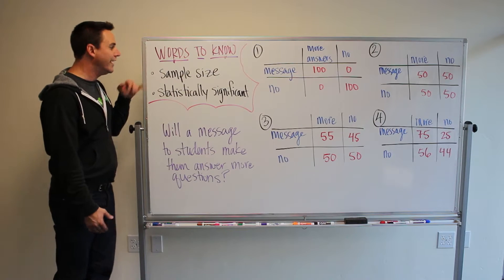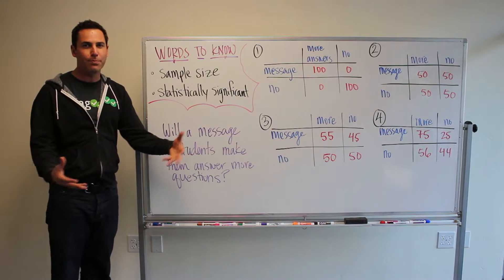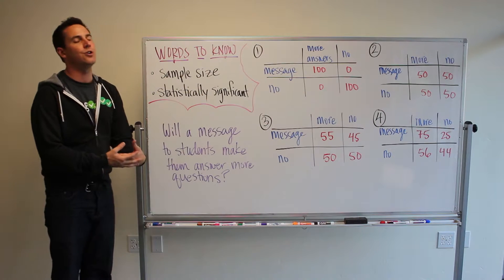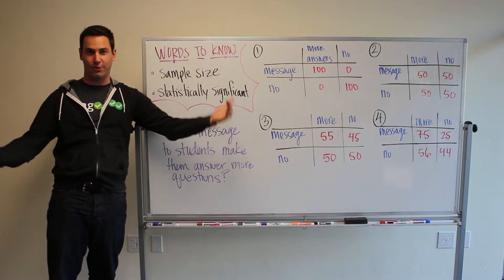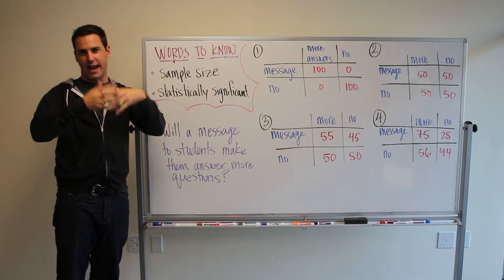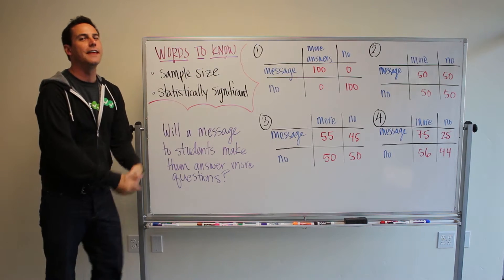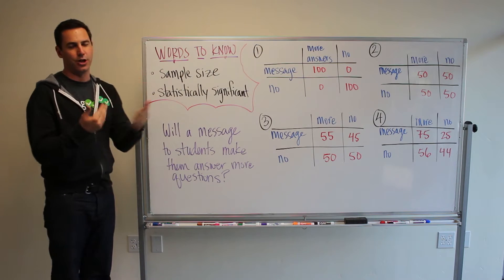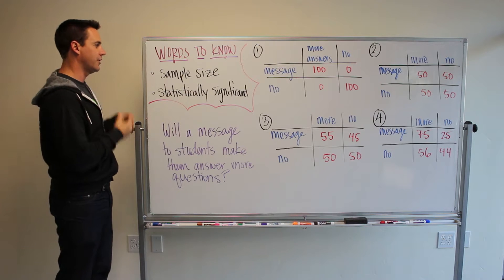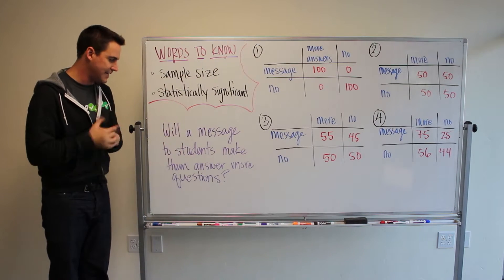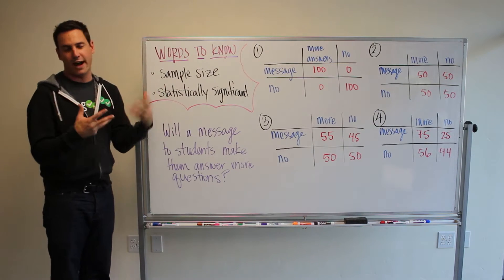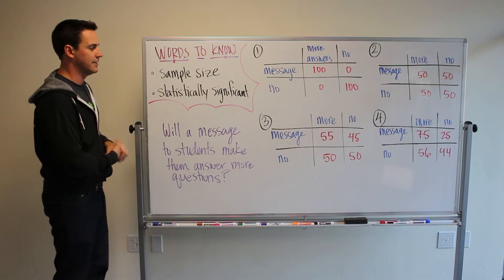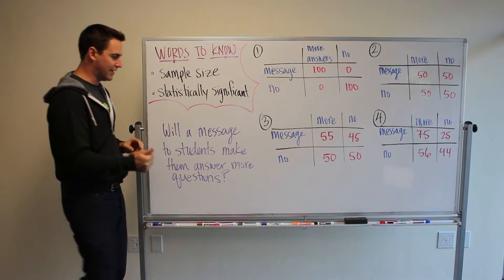So first thing you're going to do is get a sample group or a sample size to test with. And so we wouldn't test this with every single Magoosh student, just like scientists don't ask every single person in the world. They find a big enough group that could be representative of everyone in that group. And so, for example, to test this idea, we would craft a message and then choose a group of maybe 200 people to work with or 200 students. And so that's what we did.